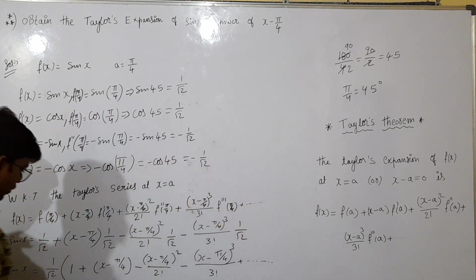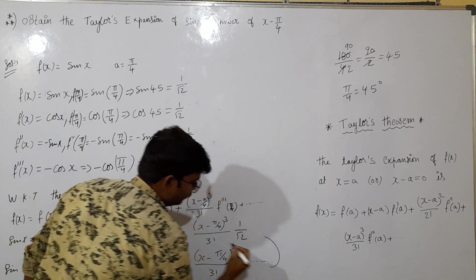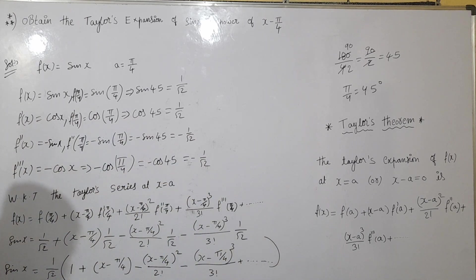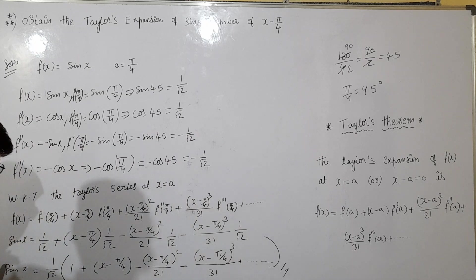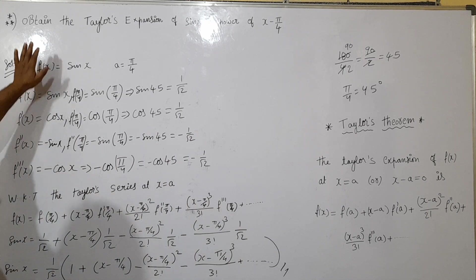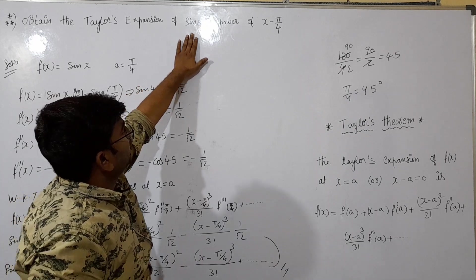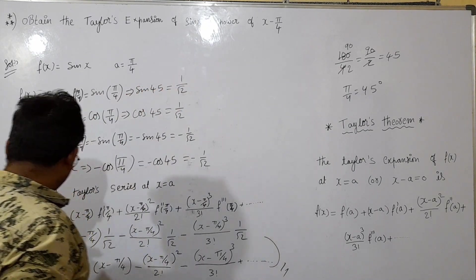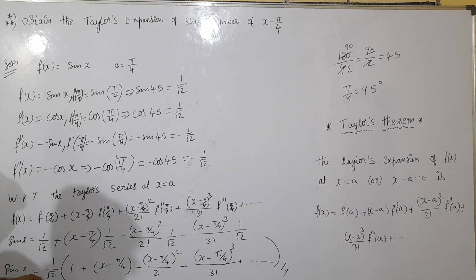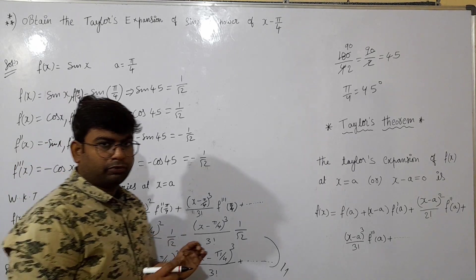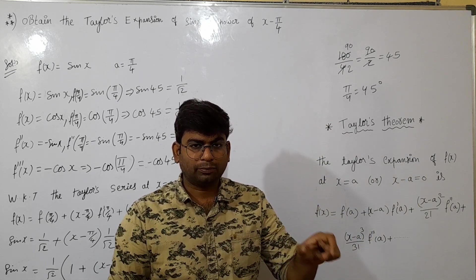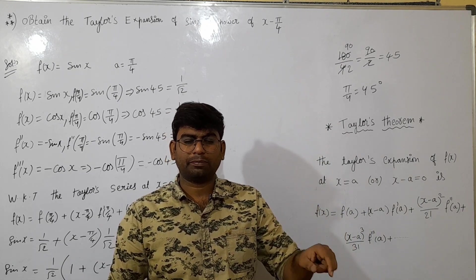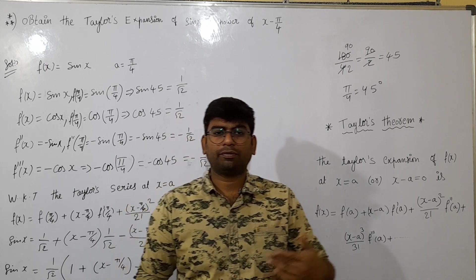So, we can close this bracket. By expansion, 1 by root 2 — Taylor's expansion is done. This is our expansion. sin x is done. Obtain the Taylor's expansion of sin x — sin x. This video is clear. Like and subscribe. Click in the description and comment in the next video. Bye.